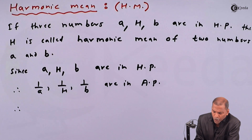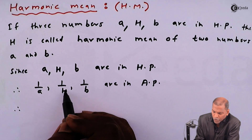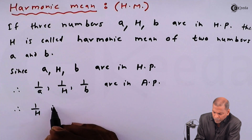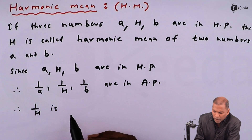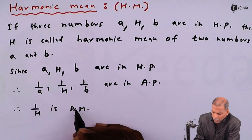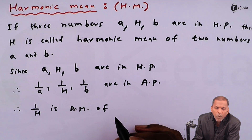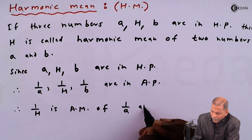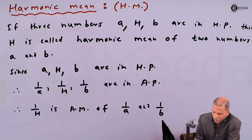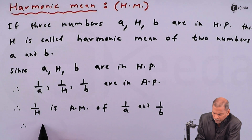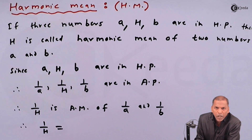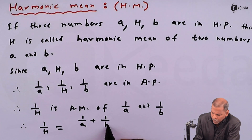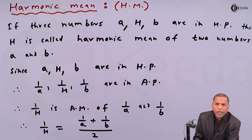Since the three numbers 1/a, 1/H, and 1/b are in AP, then 1/H is the arithmetic mean of 1/a and 1/b. Therefore, we must have: 1/H = (1/a + 1/b) / 2.